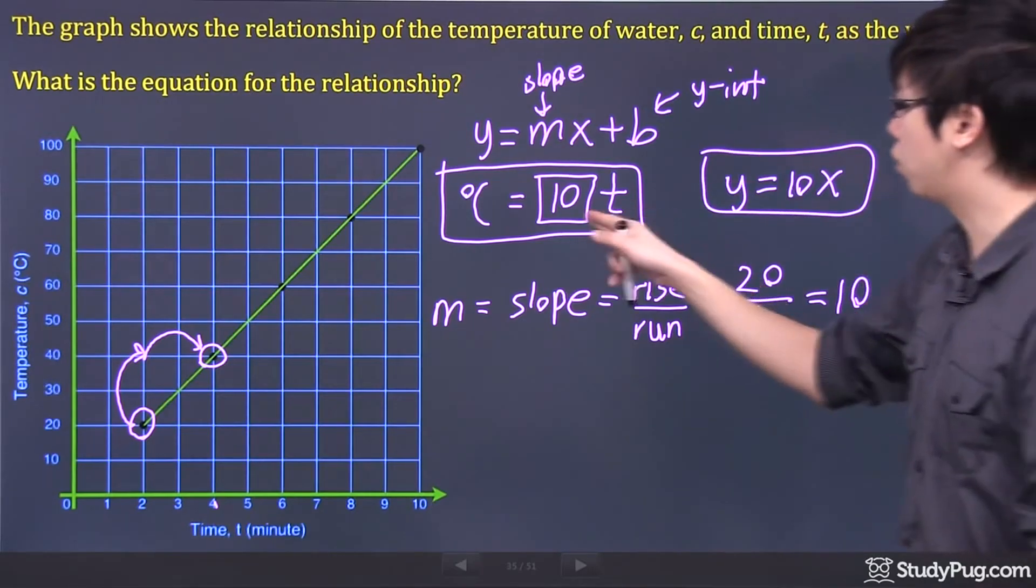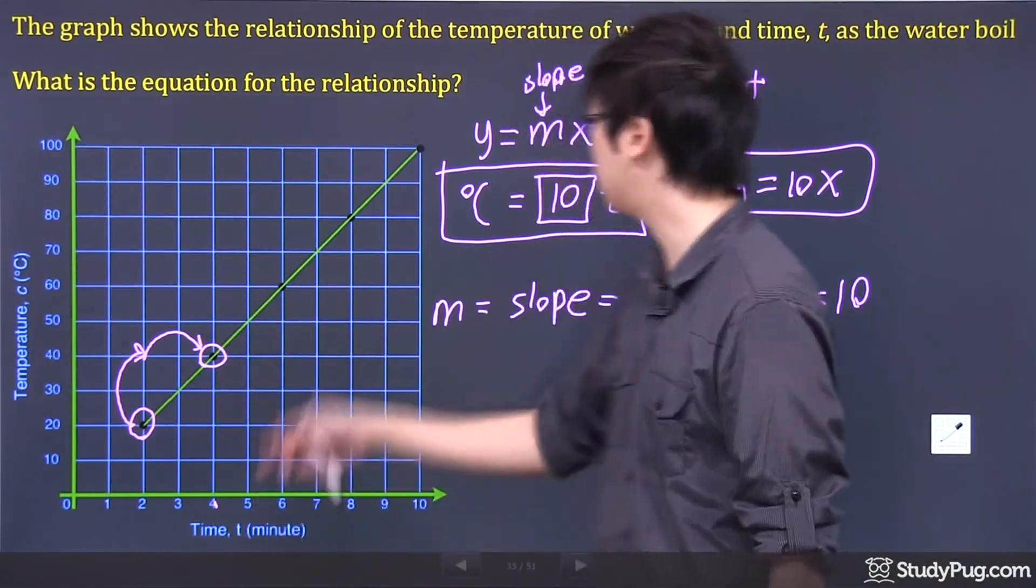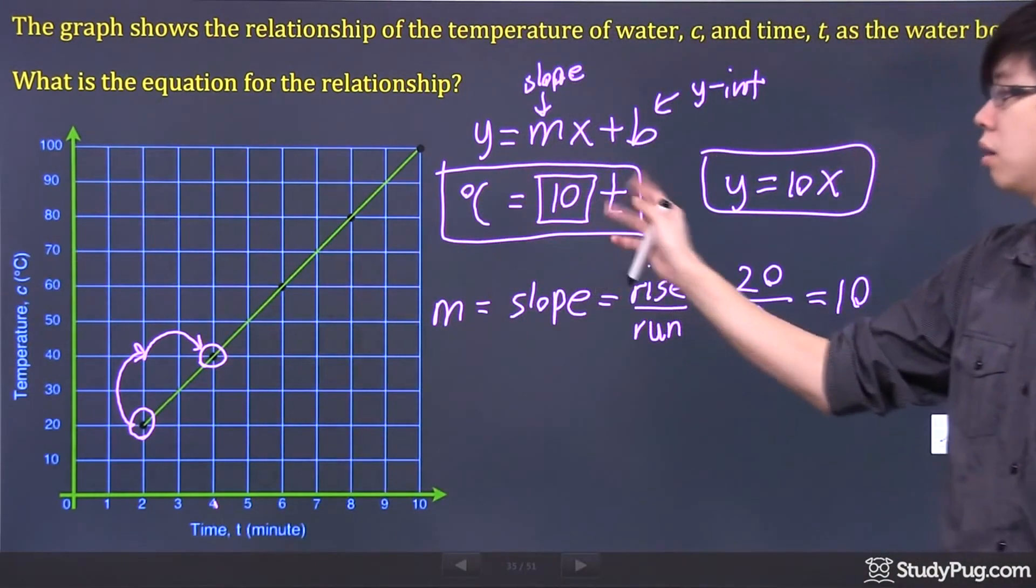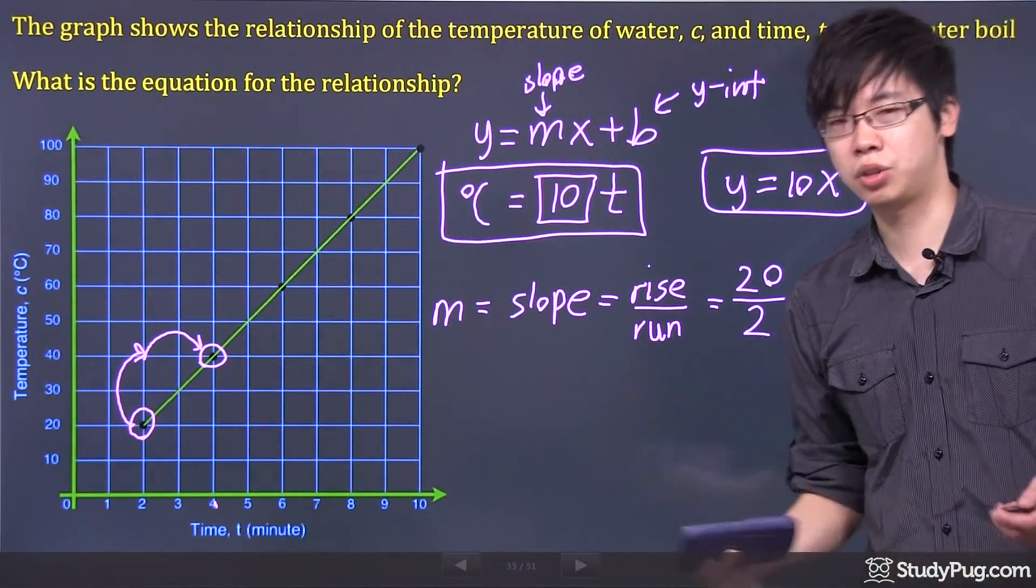You all right? But if you want to use the variables from the question, then it'll be degree Celsius equals to 10 times the t. All right? Let's check out the next part.